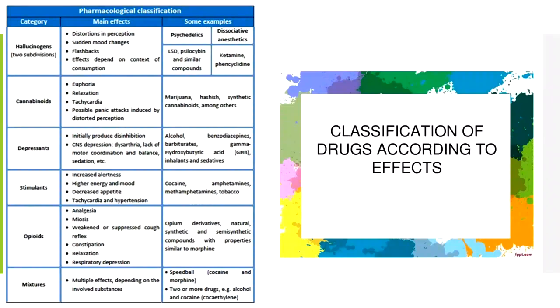The classification of drugs by effects: Hallucinogens include psychedelics and dissociative anesthetics — their main effects are distortion in perception, sudden changes, flashbacks, and effects that depend on the context of consumption. Cannabinoids produce euphoria and relaxation — examples include marijuana and hashish. Depressants initially produce disinhibition followed by central nervous system depression — examples include alcohol, barbiturates, and benzodiazepines.